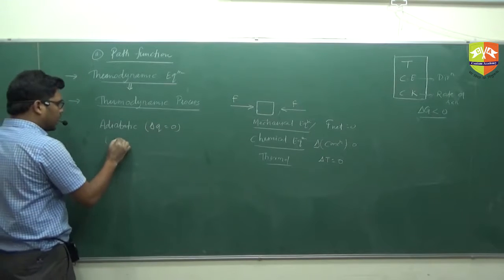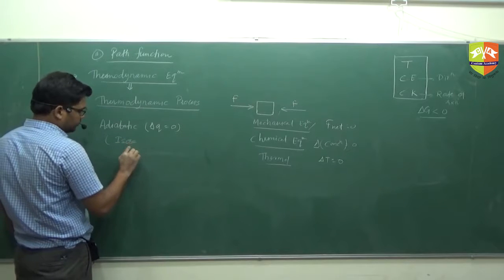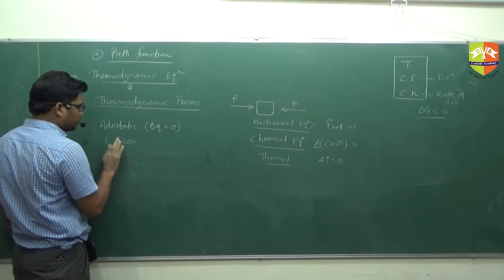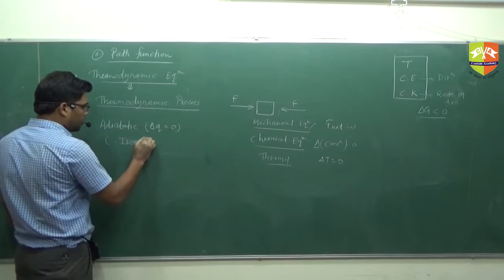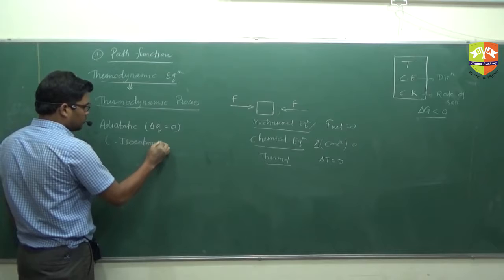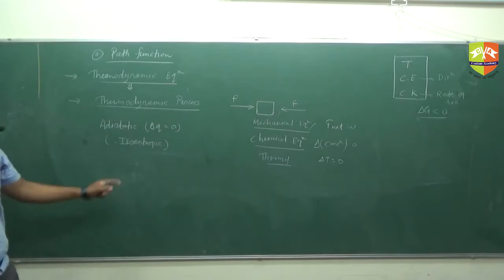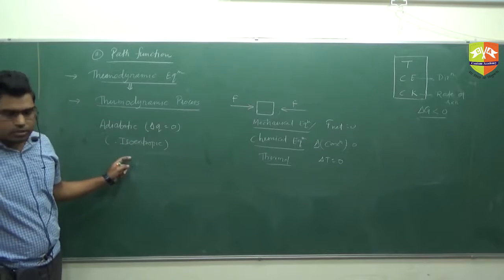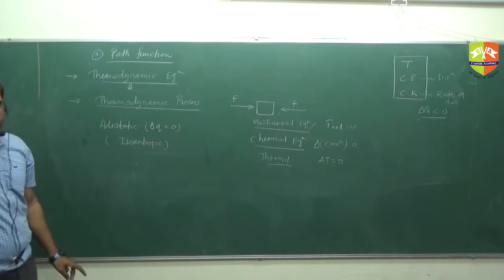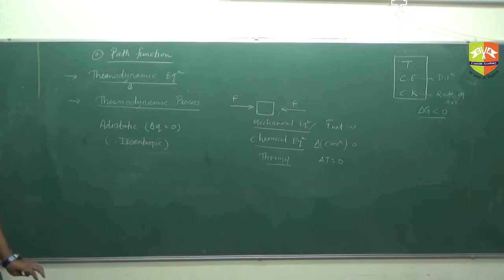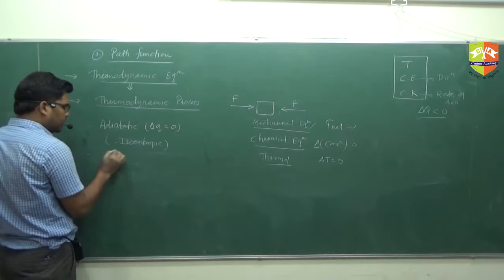We also call the adiabatic process isoentropic. When delta Q is zero, entropy won't change — entropy will also be constant. We will discuss entropy later, after the second law of thermodynamics. So adiabatic is also called isoentropic.